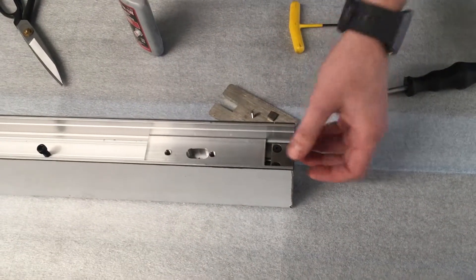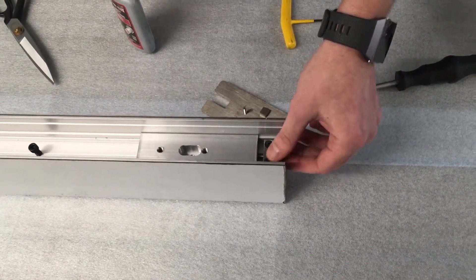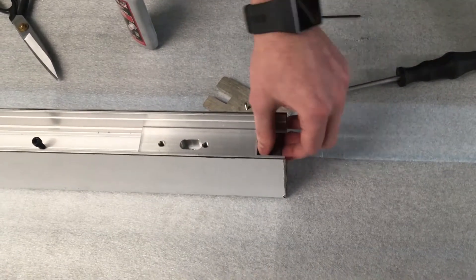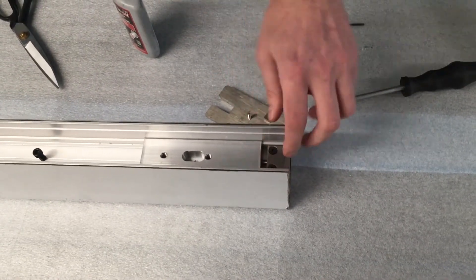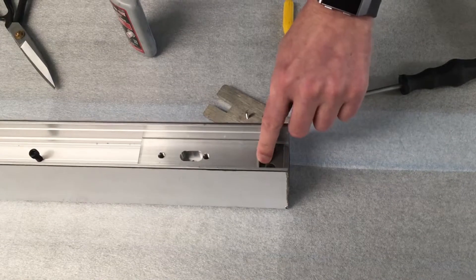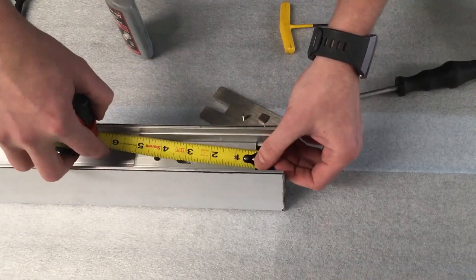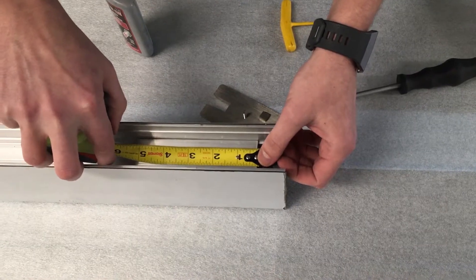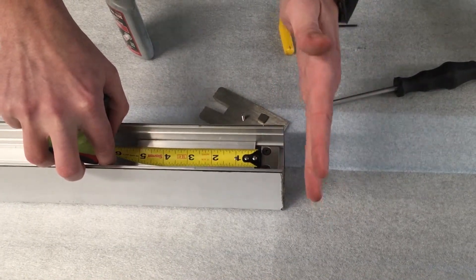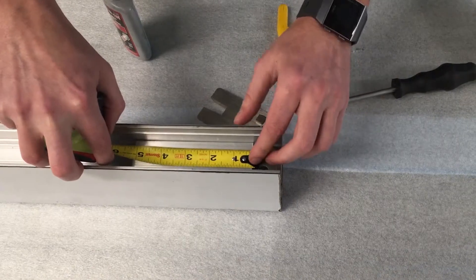Once the fasteners are tightened down for the adjuster block, measure the gap between the adjuster block and the PVPL. The gap should be approximately a quarter of an inch to get your ideal pivot location of 2 and 5/8 inches from the edge of the end cap.